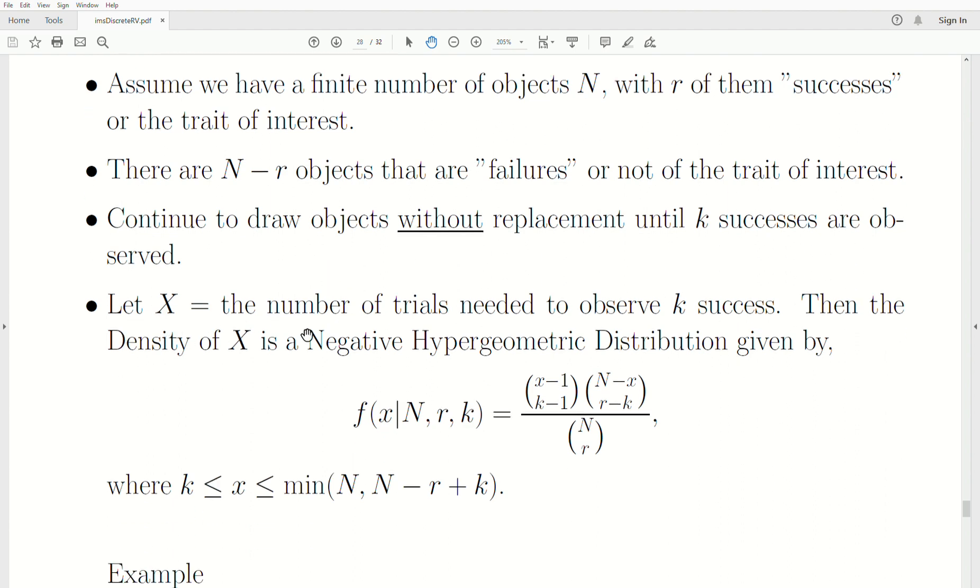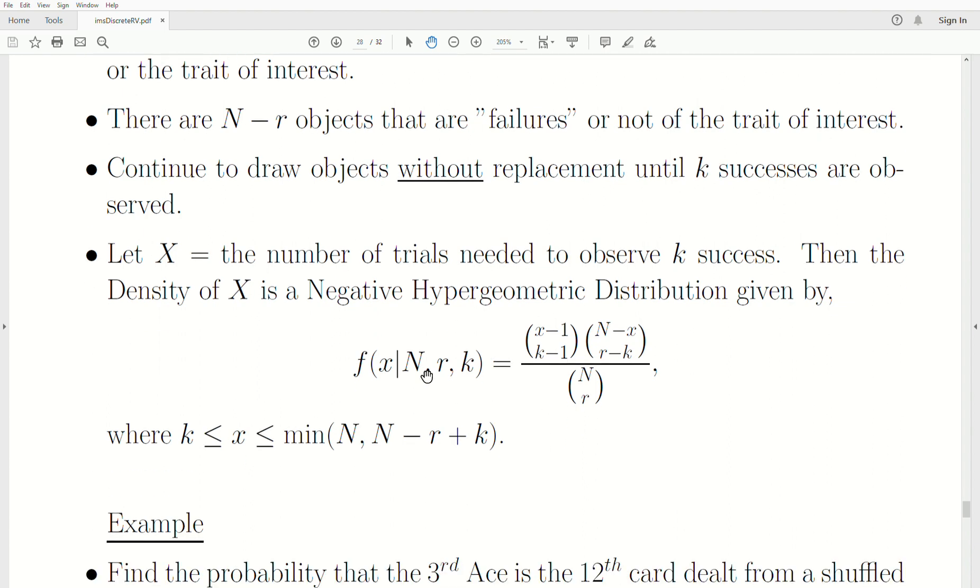Let X equal the number of trials needed to observe k successes. Then the density of X is a Negative Hypergeometric Distribution. It looks like a Hypergeometric Distribution but it's absolutely not. It's similar—the product of two combinatorics divided by a combinatoric—but don't mistake it as one.